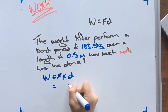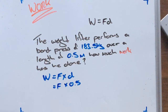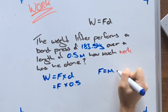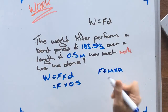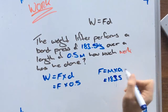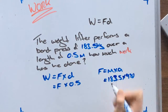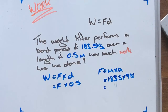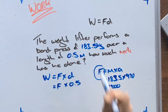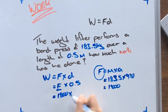We can see that we have the distance, however we are not given the force, so we need to work out force. Force is equal to mass times acceleration, and we have the mass — 183.5 — multiplied by 9.81, because we are being accelerated by gravity. So 183.5 times 9.81 gives us 1800. We have now worked out force, which we can enter in here.